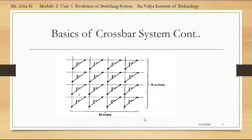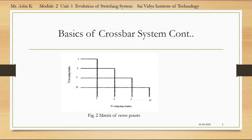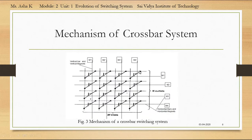The basics of the crossbar system: the figure shows the matrix of cross points where we have m inlets and n outlets. The modified crossbar switching system with matrix of cross points is shown in figure 2. The mechanism of the crossbar is shown in figure 3. Crossbar switches have vertical bars and vertical magnets, also called holding magnets and holding bars, and horizontal bars and horizontal magnets, also called selecting bars and selecting magnets. By energizing the horizontal bars and vertical bars, a particular cross point can be used to establish the connection.